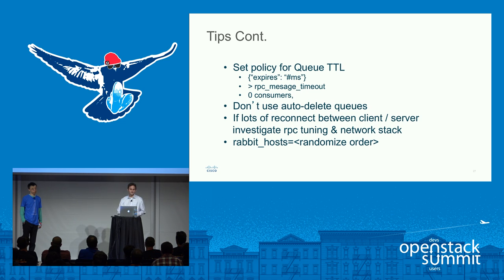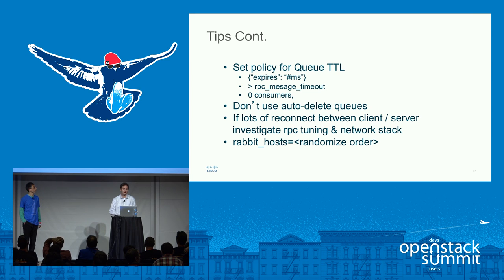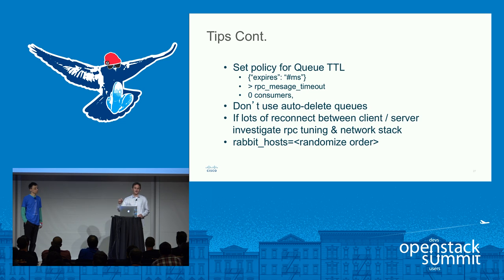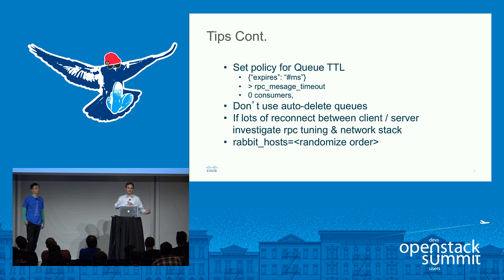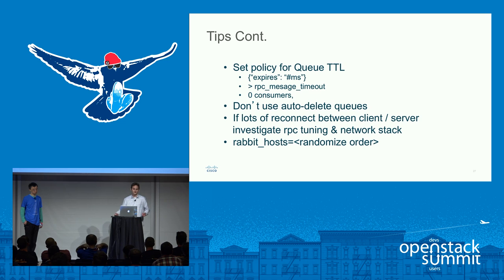If you see lots of reconnects between the client and server, investigate more into the RPC tuning and definitely look into your network stack to see if there are any errors. Another tip: by default, when you set the Rabbit hosts list on the client side, it will always connect to the first host in the list. So if you restart a whole stack, they're all going to try to connect to Rabbit 1. One little trick is to basically randomize the order across different services so it's not always Rabbit 1, 2, 3 — that way, if you restart all the services, they'll actually distribute the load a little bit better.